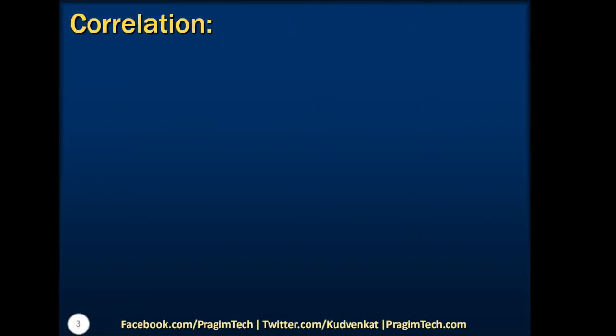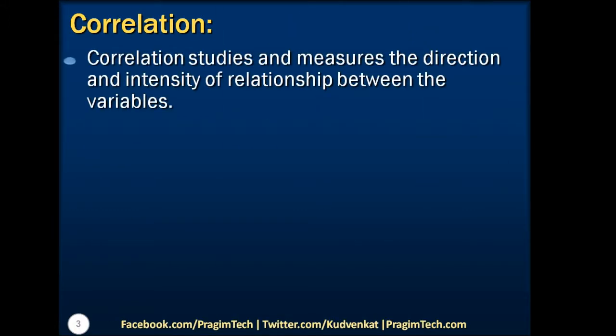Correlation is defined as the study and measure of the direction and intensity of relationship between the variables. In simple words, we can say that correlation indicates the relationship or association between two variables.